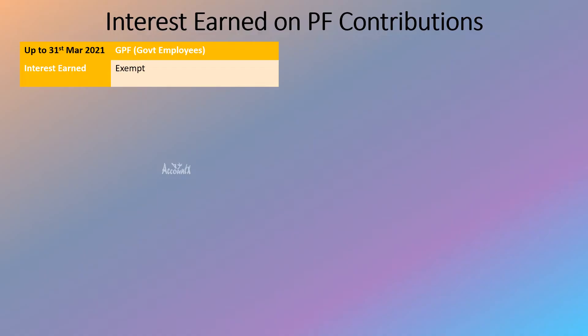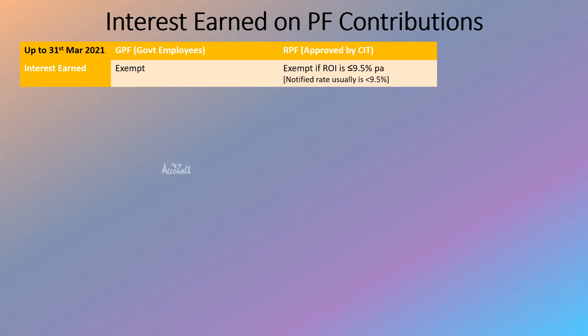Next, let's understand how interest earned on PF contributions is treated under the Income Tax Act. Up to 31st March 2021, interest earned was fully exempt subject to certain conditions. For GPF, interest was fully exempt. For RPF, interest was exempt if the rate was up to 9.5% per annum — since the notified rate was always less than 9.5%, practically the entire interest was exempt. For UPF as well, interest earned was exempt.